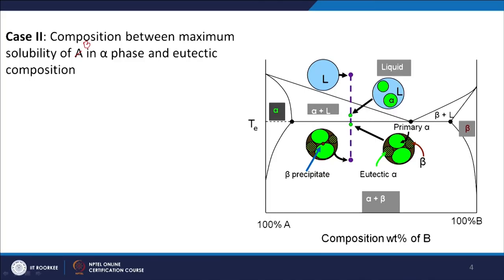Please remember that we are talking here about equilibrium cooling only, so we are following the equilibrium phase diagram. Now for case two — composition between the maximum solubility of B in alpha phase and eutectic composition. Again we start with a liquid phase at point 1 — the whole volume is liquid phase and we are cooling. When it crosses the liquidus line, alpha phase will start nucleating. At point 2, a lot of alpha solid phase is present and some liquid remains, which can be found using the tie line and lever rule.